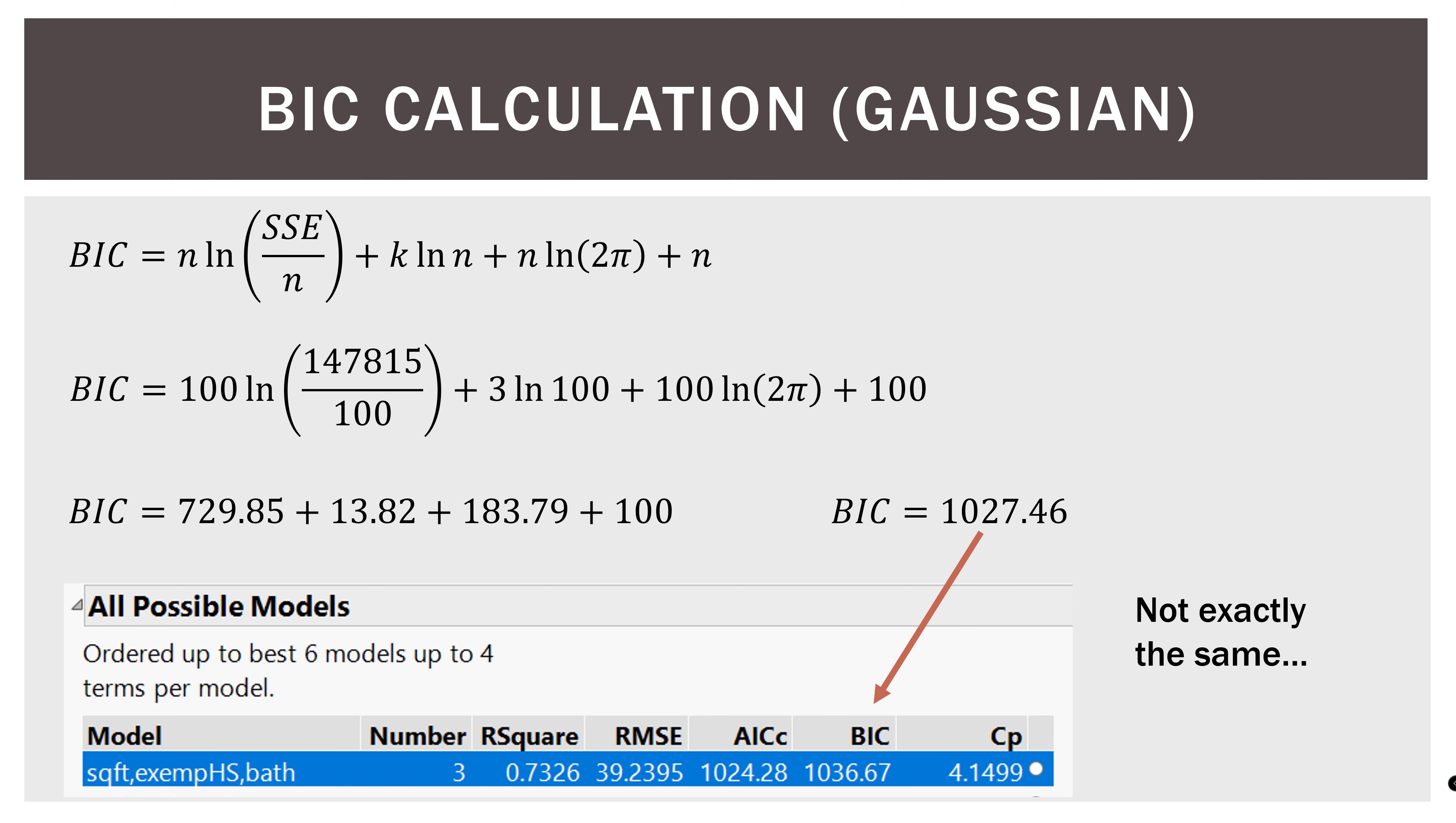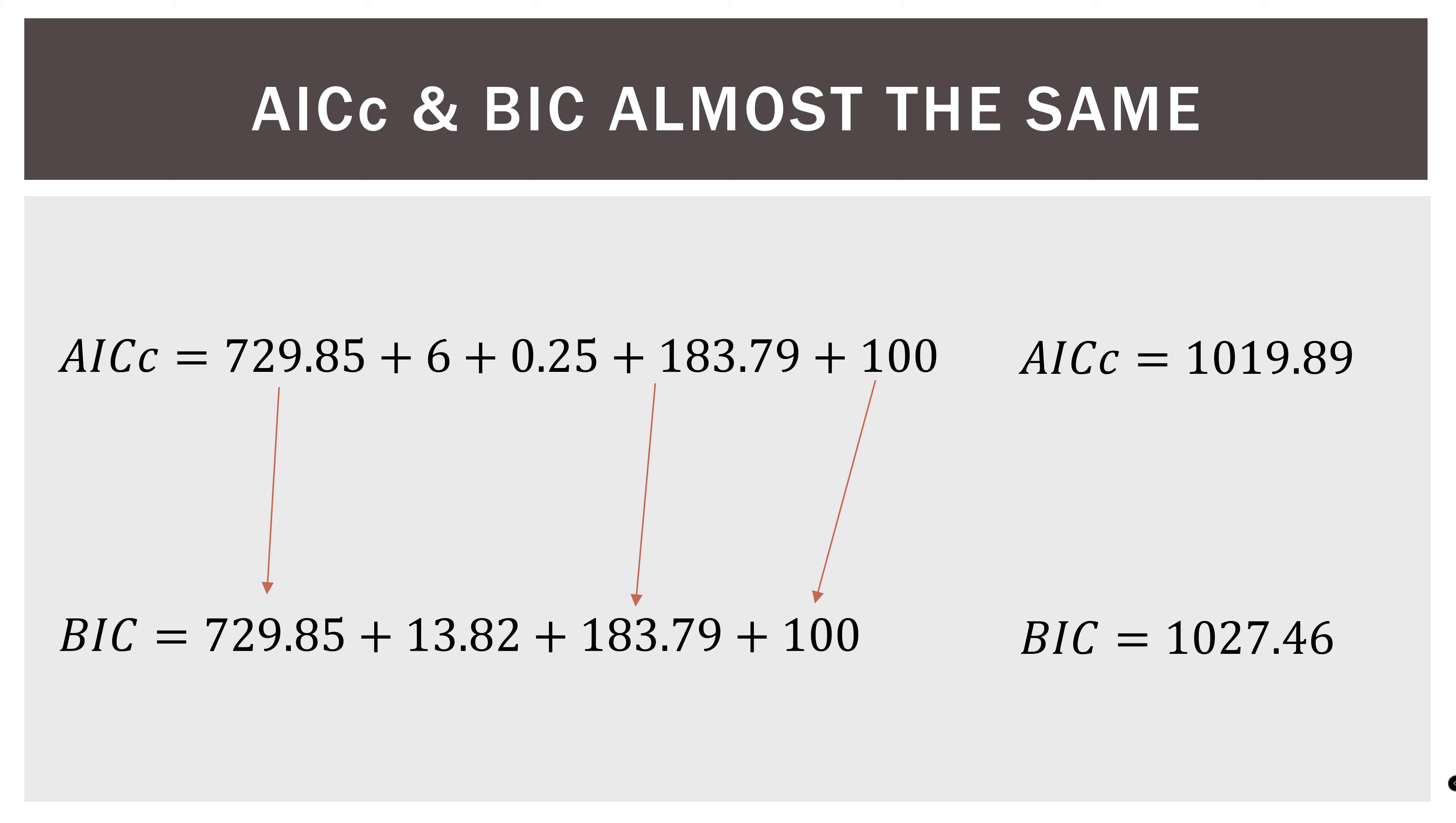So if you notice, when we did the math out and we kind of take each term separately, you can see that the AICC and the BIC are almost the same. Over on the left-hand side, we have this term that equals 729.85, which we'll get to in a minute. Then we have a little bit of difference in the middle. Then we have the 183.79, then of course the 100 there on the end. So the terms are almost identical between the AIC and the BIC. And of course, that is because they are highly related. And the BIC penalizes things a little bit more. So the score is a little bit higher consistently. However, you can see they are very similar.